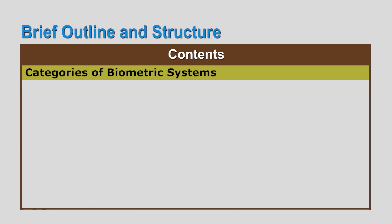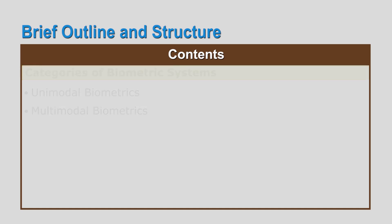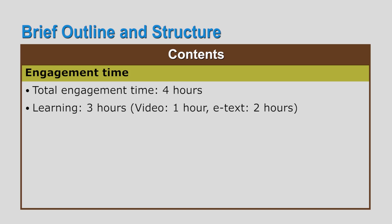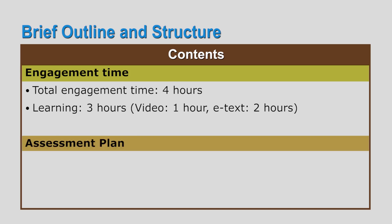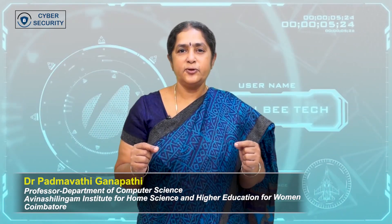The second phase also covers performance metrics and the different categories of biometric systems, namely unimodal biometrics and multimodal biometrics. The total engagement time is four hours — three hours of learning with one hour of video lecture and two hours with e-text and reference materials. The assessment plan includes quizzes for 15 minutes and the discussion forum for 45 minutes.